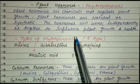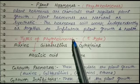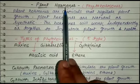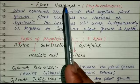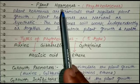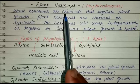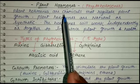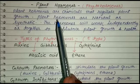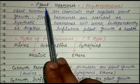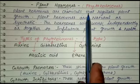Plants can sense things like light, gravity, chemicals, water, and touch by the action of plant hormones. These stimuli are called environmental changes. So we can also say that plants control and coordinate their behavior against environmental changes by using plant hormones.